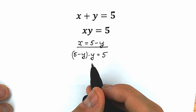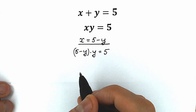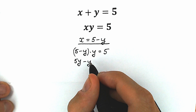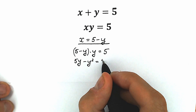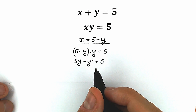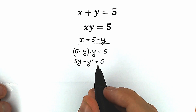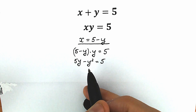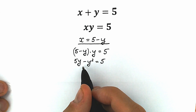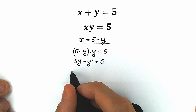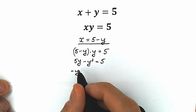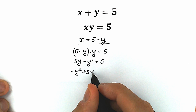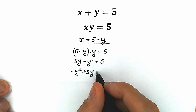Right now let's multiply this parenthesis by y. As a result we have 5y minus y squared equal to 5. Right now it looks like a quadratic equation — we have the second power, the first power, and a coefficient — but we prefer a different order. So let's put minus y squared on the first position, then plus 5y, and then minus 5.